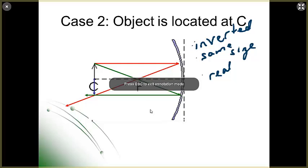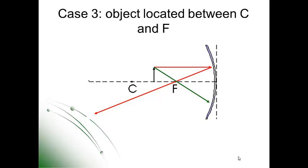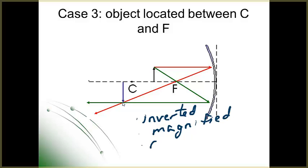For case number three, the object is located between the center of curvature and the focal point — somewhere between C and F, though not necessarily exactly in the middle. Drawing two rays: parallel to the axis reflects through the focal point; through the focal point reflects parallel. Where the two rays cross locates our image. This image is inverted, it is magnified, and it is a real image — meaning you could put a piece of paper or screen at that location and actually project the image there.